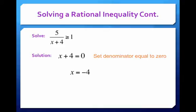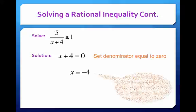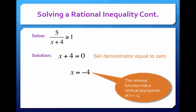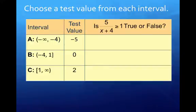So we cannot plug in negative 4. The rational function has a vertical asymptote at x equals negative 4.